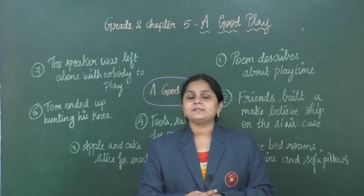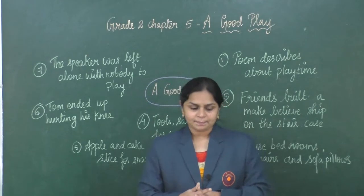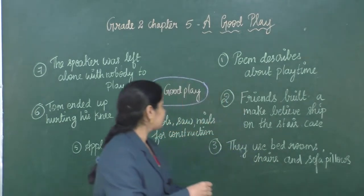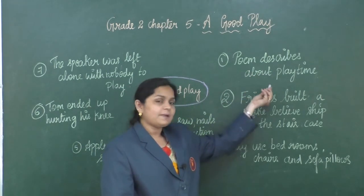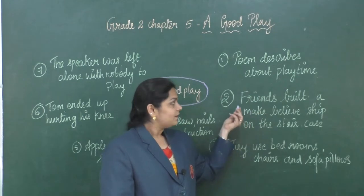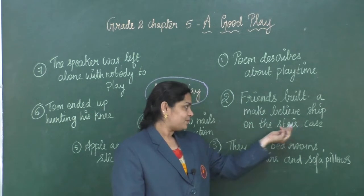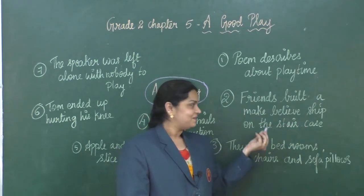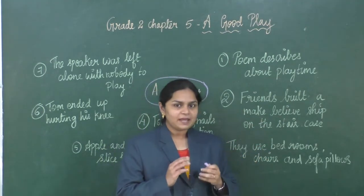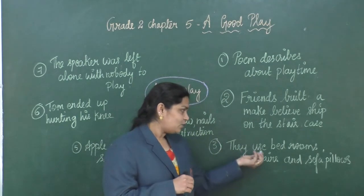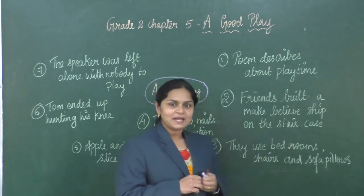The poem describes the playtime of two friends. Now let us revise the chapter using this mind map. The poem 'A Good Play' describes the playtime between two friends. These two friends built a make-believe ship on the staircase — how funny! They used bedrooms, chairs, and sofa pillows to make the ship.